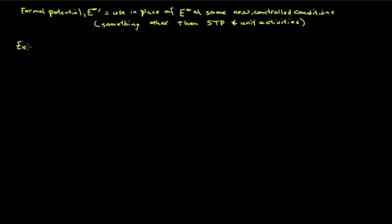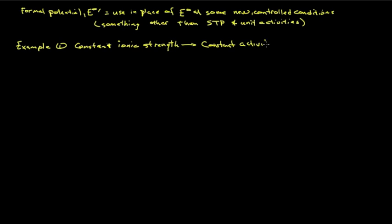Let's take a look at a couple of examples. For example, one: we might want to use a constant ionic strength. That will then give us constant activity coefficients, which allows us to use concentrations instead of activities.